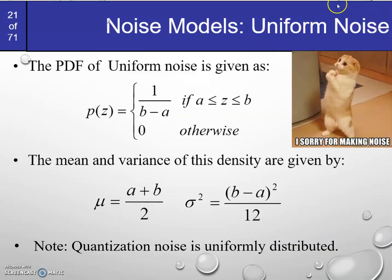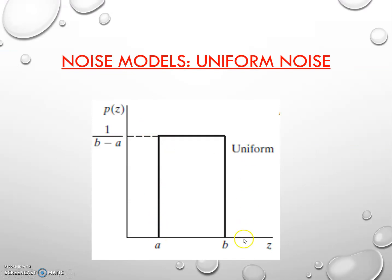Now let's consider uniform noise. The PDF of uniform noise is: p(z) = 1/(b−a) if z lies in the interval [a, b], and 0 otherwise. This is easily understood from the graph — on the z-axis we have the noise values and on the y-axis the probability. For any value within the interval a to b, the probability is the constant value 1/(b−a), which is why it is called uniform noise. Outside the interval, the value is 0.